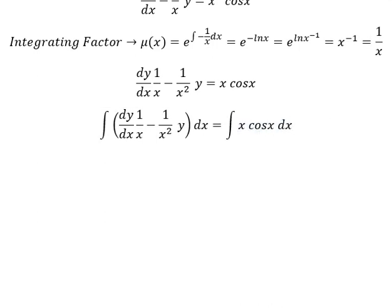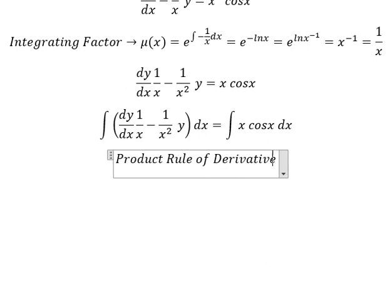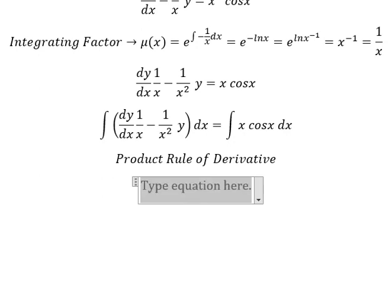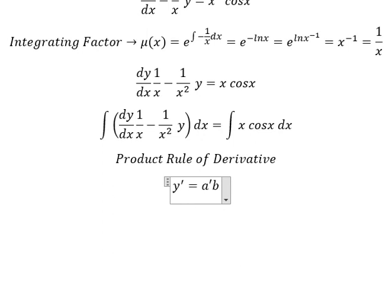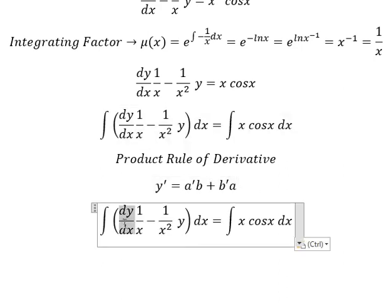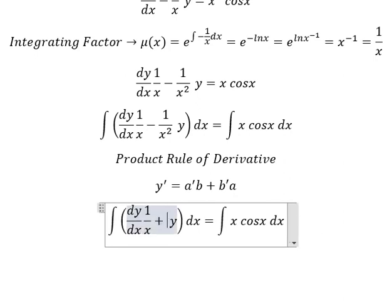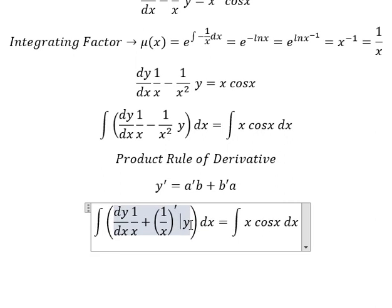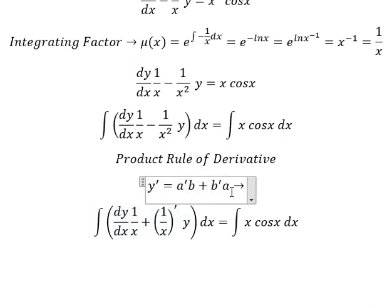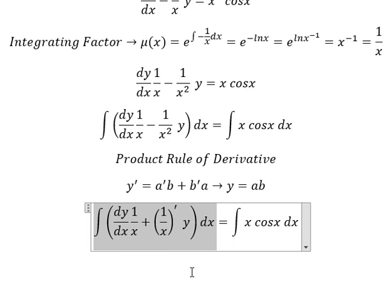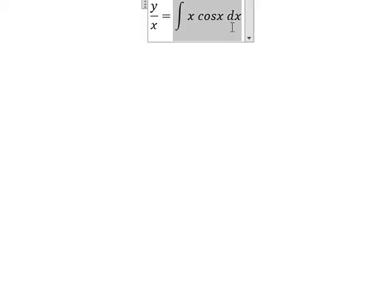Next we can use the product rule of derivatives. The first derivative of y equals the first derivative of a multiplied by b, plus the first derivative of b multiplied by a. Applying this, we recognize the left side, so integrating both sides gives us y over x.